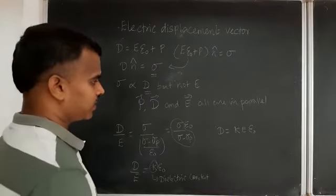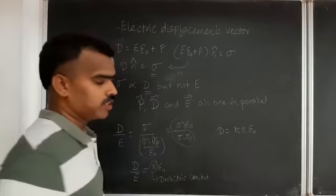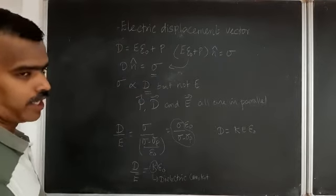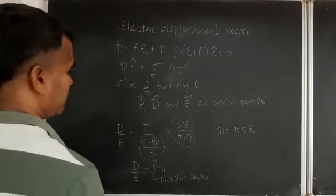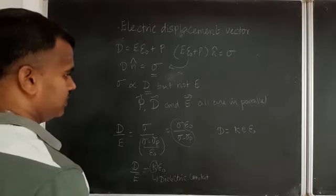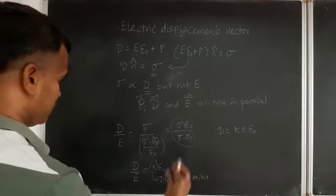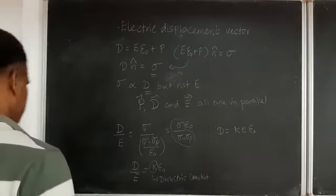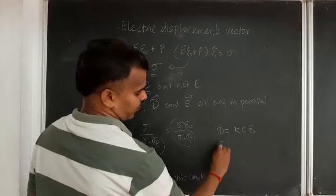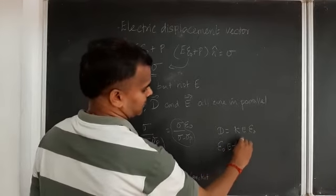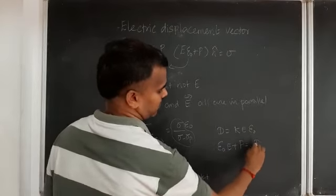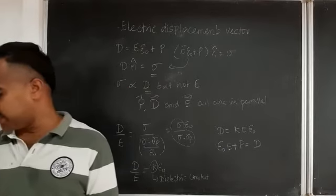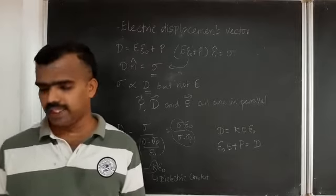So the electric displacement vector in terms of dielectric constant can be written as D = K·ε·E. Here we find the value of D in terms of dielectric constant, and we can use this equation. Also, ε·E + P = D — this equation we know.